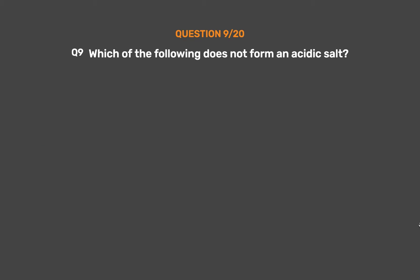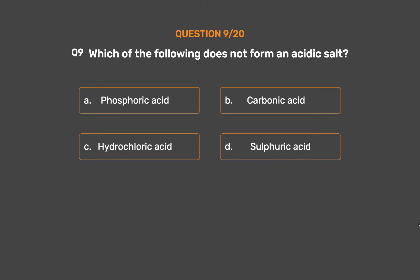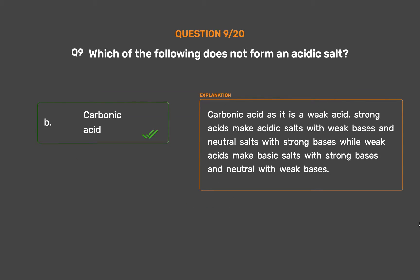Question number 9. Which of the following does not form an acidic salt? Option A: Phosphoric acid. Option B: Carbonic acid. Option C: Hydrochloric acid. Option D: Sulphuric acid. The correct answer is Option B: Carbonic acid, as it is a weak acid. Strong acids make acidic salts with weak bases and neutral salts with strong bases, while weak acids make basic salts with strong bases and neutral salts with weak bases.